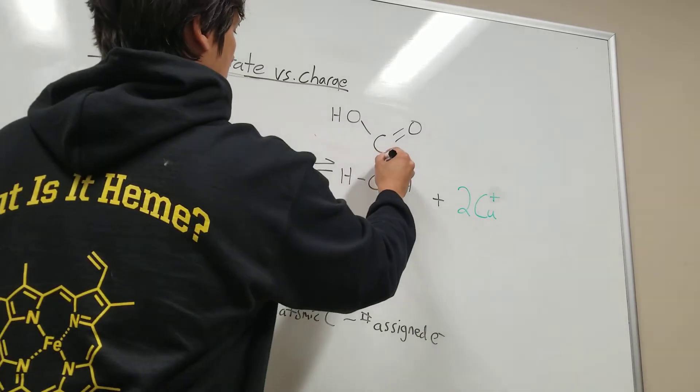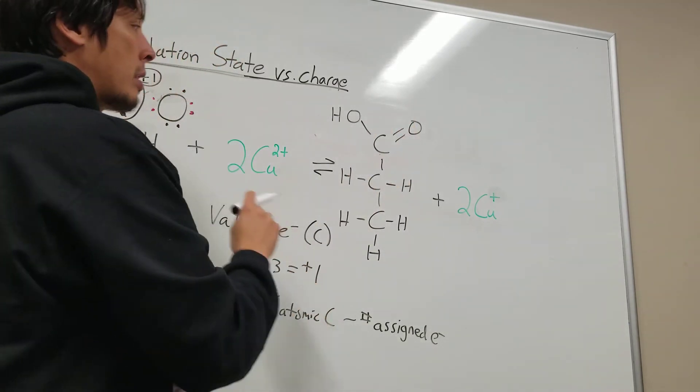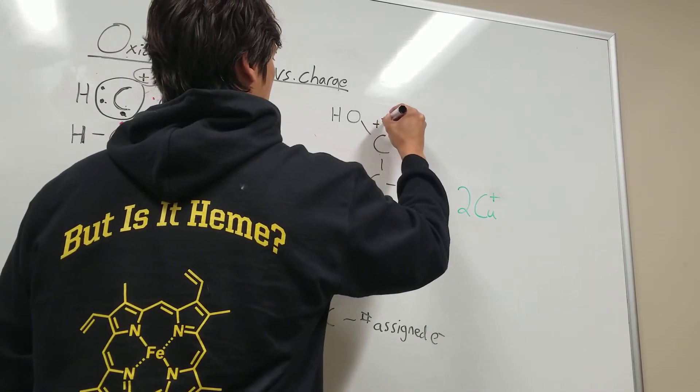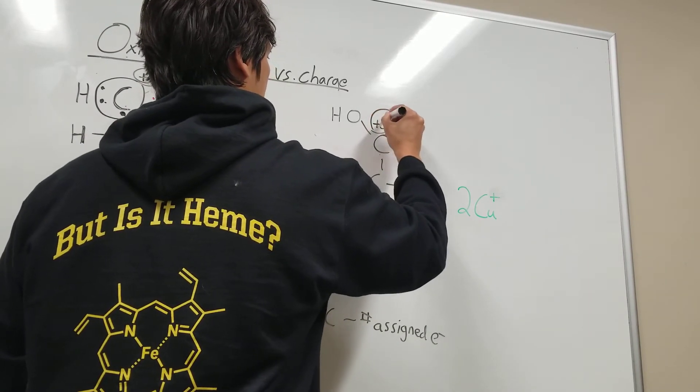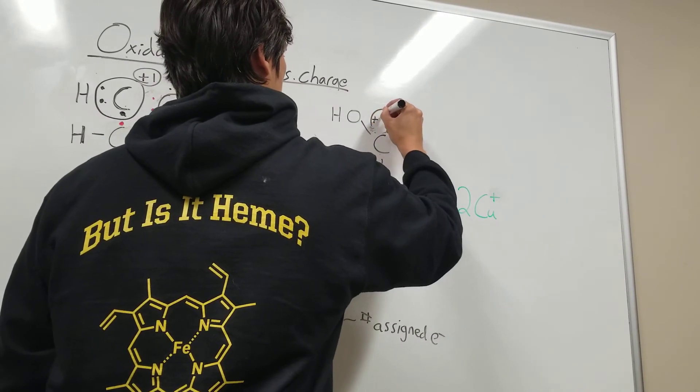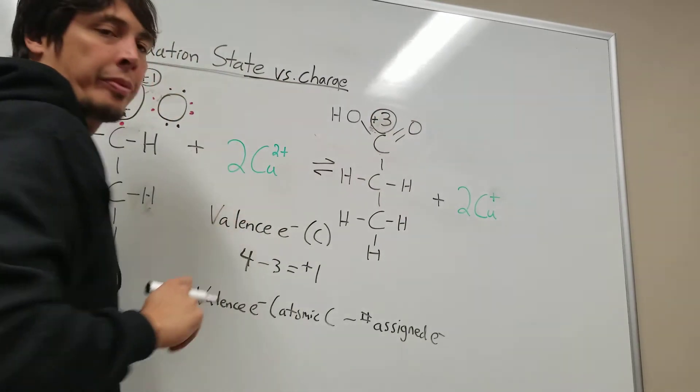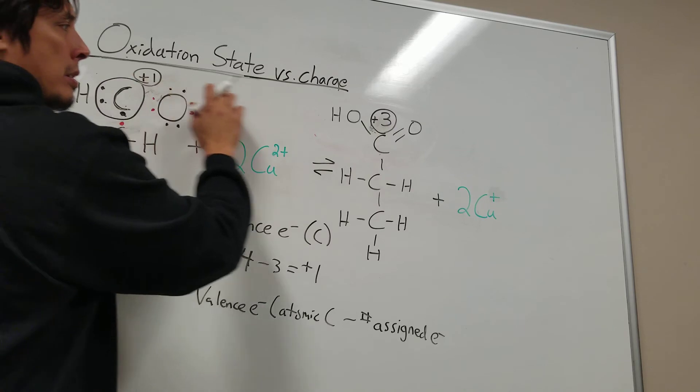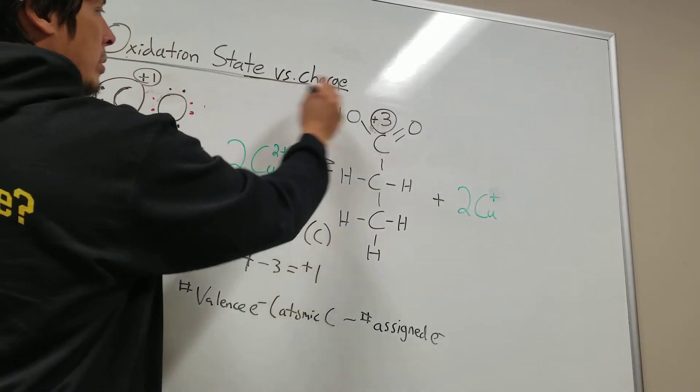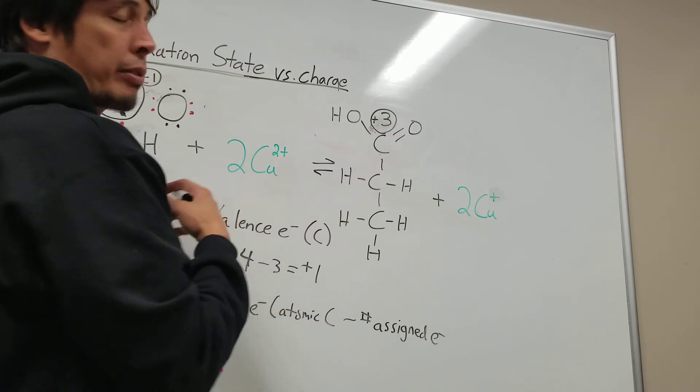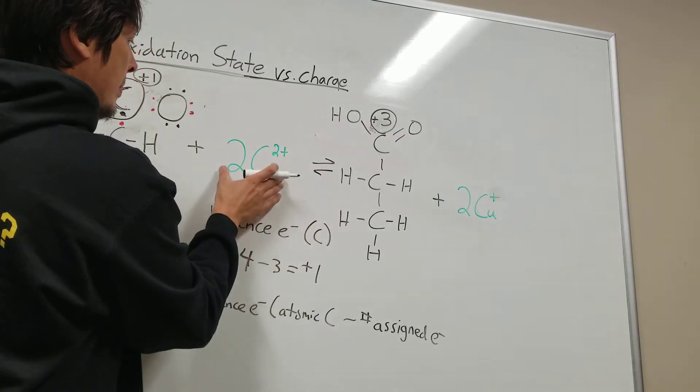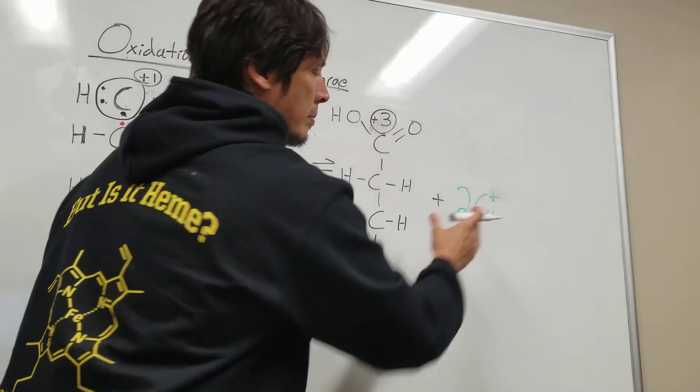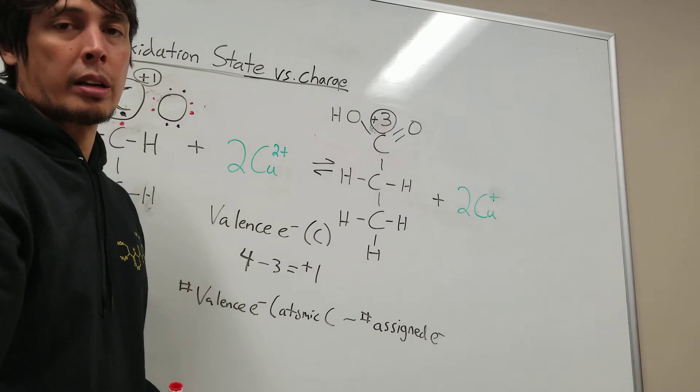We can do the similar process over here for this carboxylic acid group. What we'll find is that the oxidation state of this is plus three. So what we have is an oxidation of this carbon from a plus one to a plus three state. This is a two-electron oxidation. That provides two electrons, which go into these two copper 2+ cations here to form two copper 1+ cations.